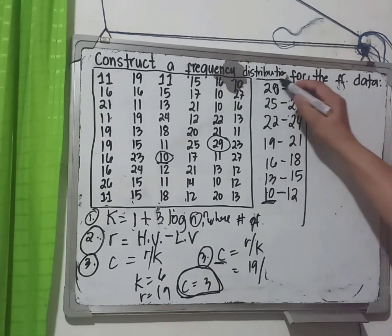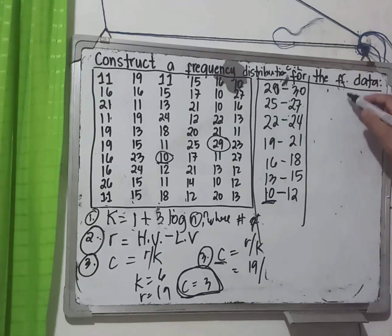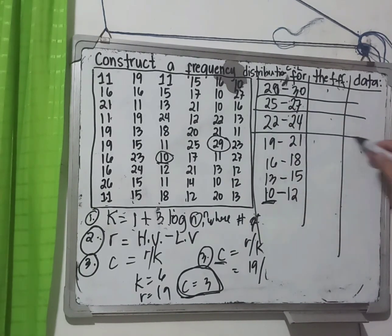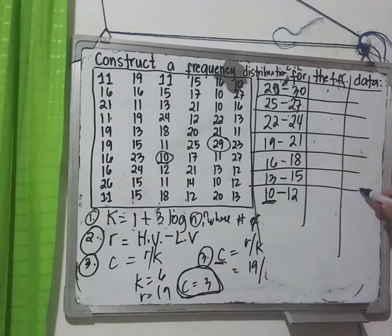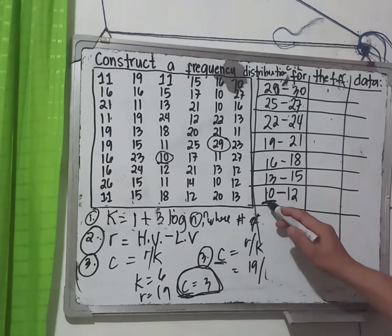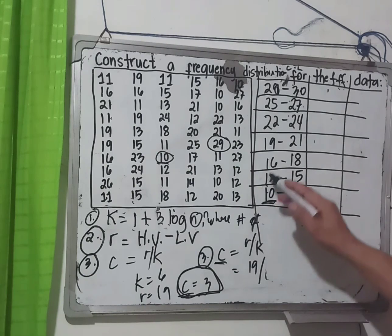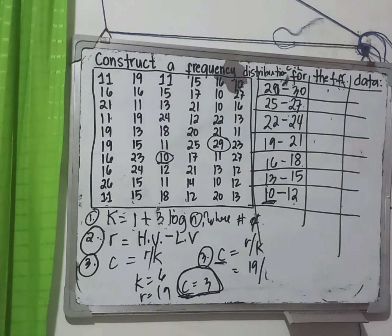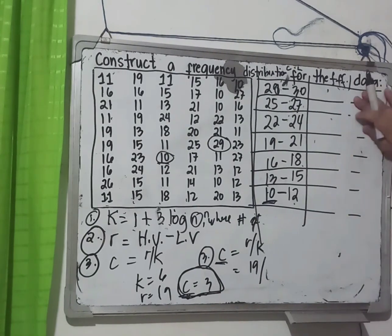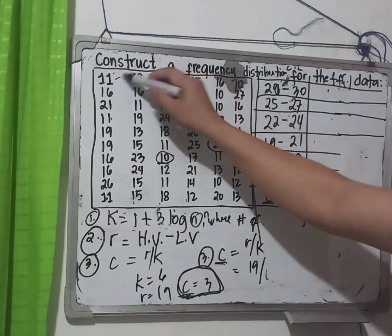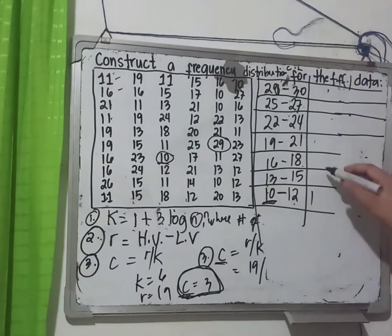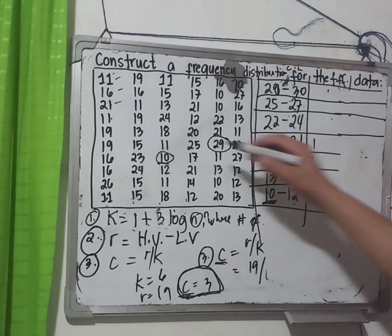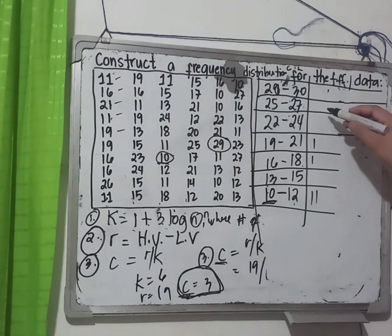Now we find the frequency for each class. Each class spans 3 values: 10–12 has size 3, 13–15 has size 3, 16–18 has size 3, and so on. We begin tallying: 11 belongs to the 10–12 class, 16 belongs to the 16–18 class, 21 belongs to the 19–21 class, 11 again in 10–12, and 19 in the 19–21 class.